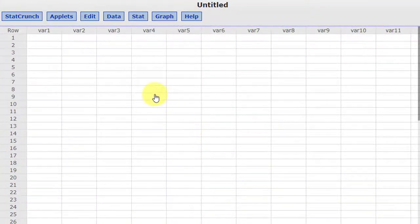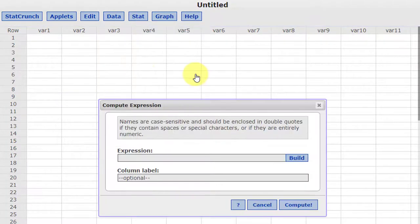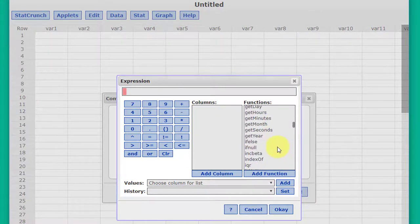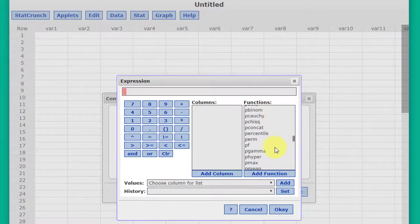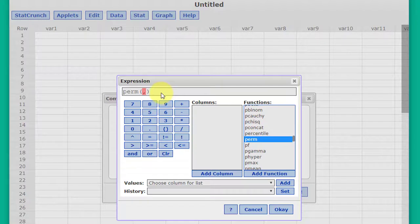I have StatCrunch open. To do a combination or permutation problem, we need to use the Data, Compute, Expression tool, and we're going to click on Build. We'll do the permutation part, so I'm going to scroll down here until I find something that looks like permutation, and there it is, PERM.